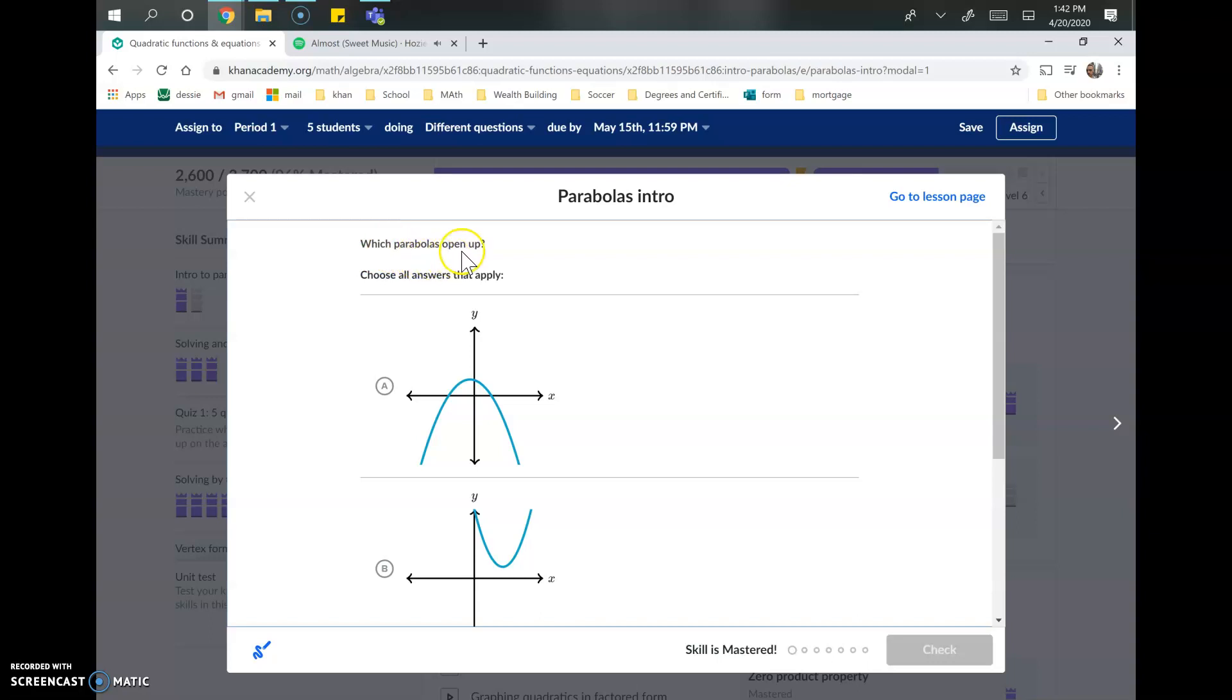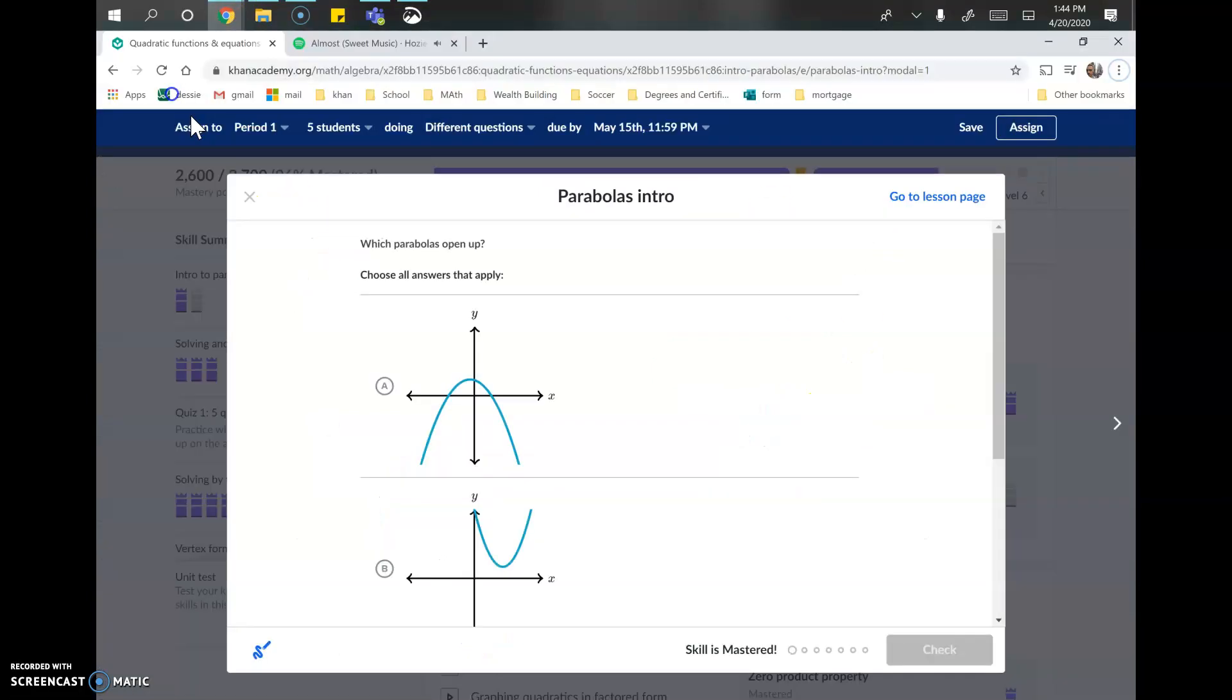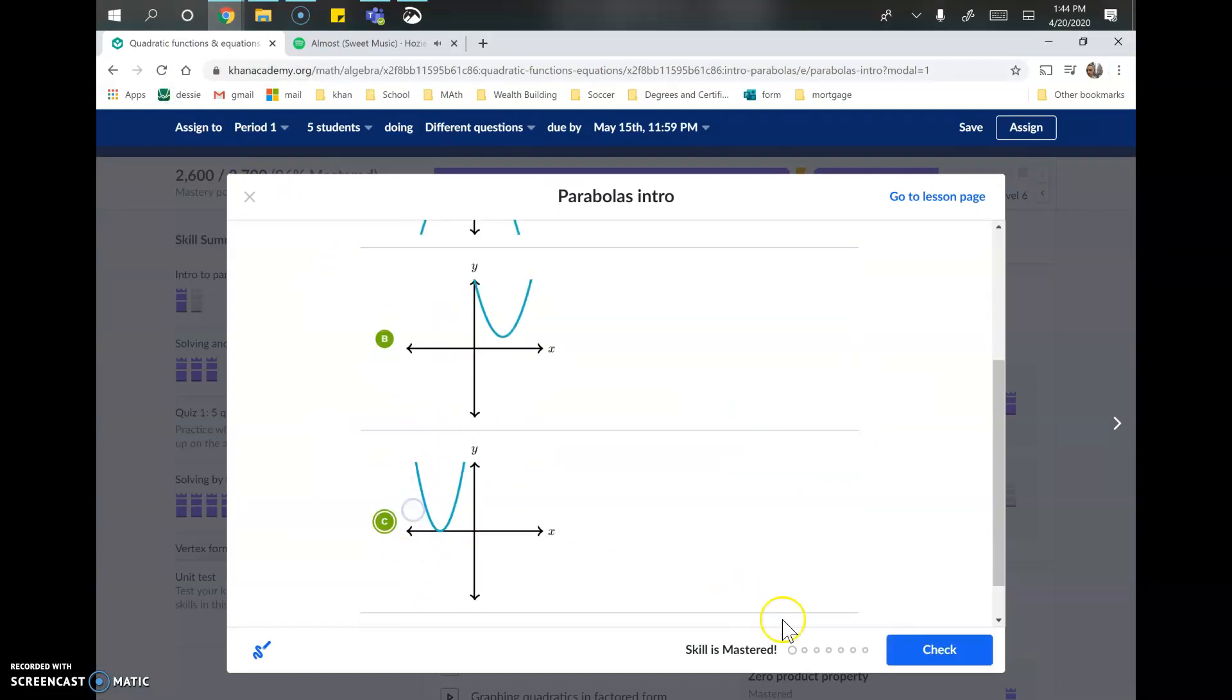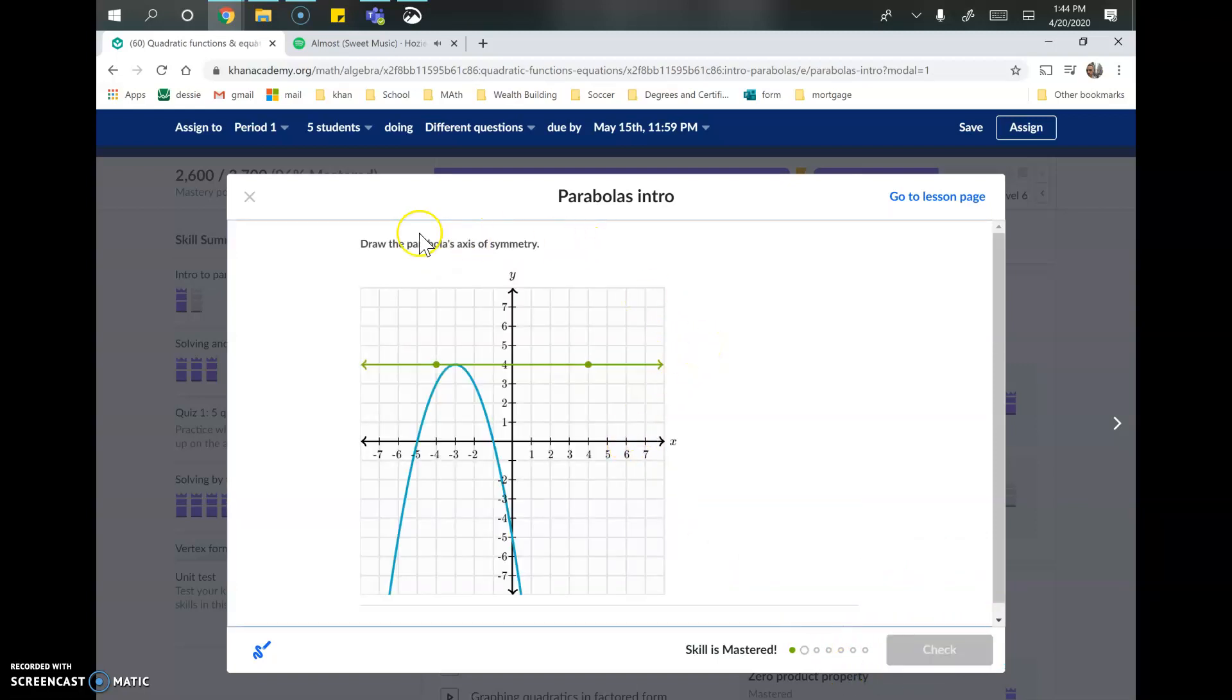First question says, which parabolas open up? We're going to make a quick note here. When we talk about opening up or down, we're talking about concavity, which is just a fancy word saying which way does the parabola open. We can use this visual diagram: up makes a U, and when it opens down it makes an N. We're going to select all the ones that open up, so we're looking for all the ones that look like a U. Let's mark: that's an N, that's a U, that's a U. Boom, done.